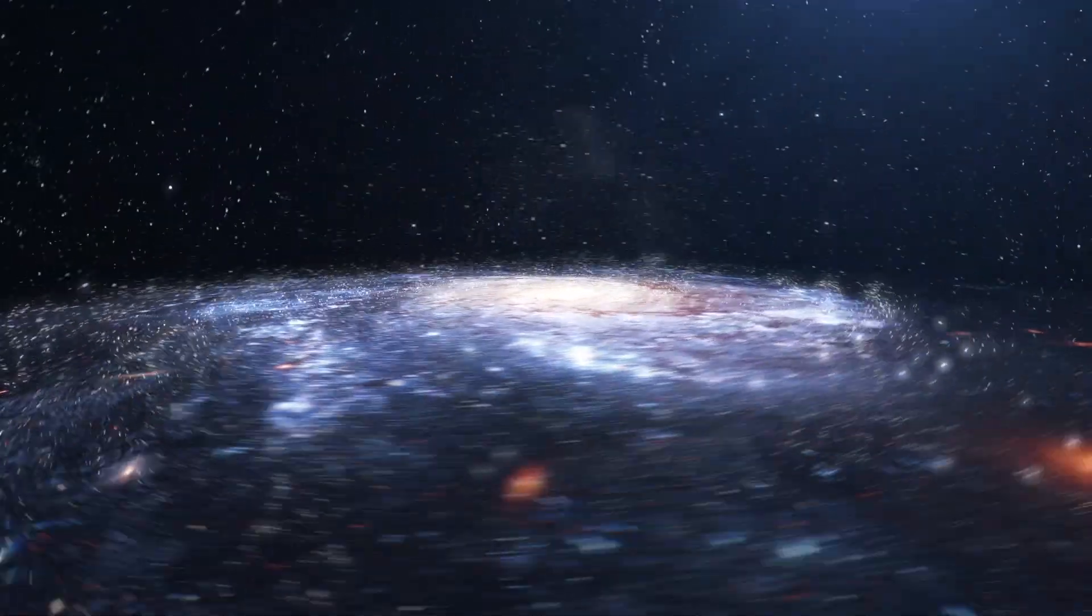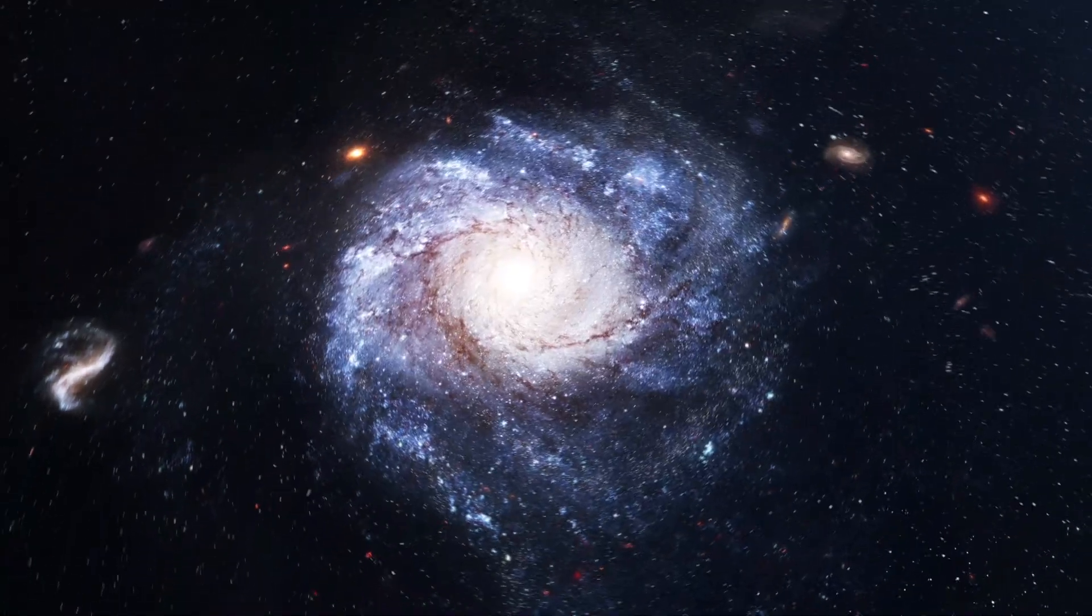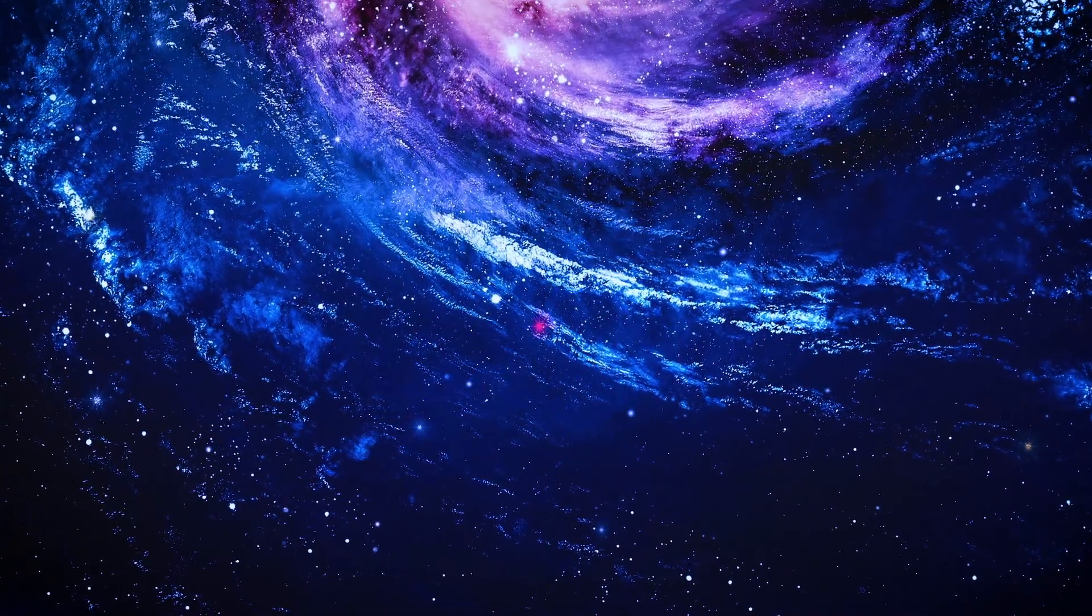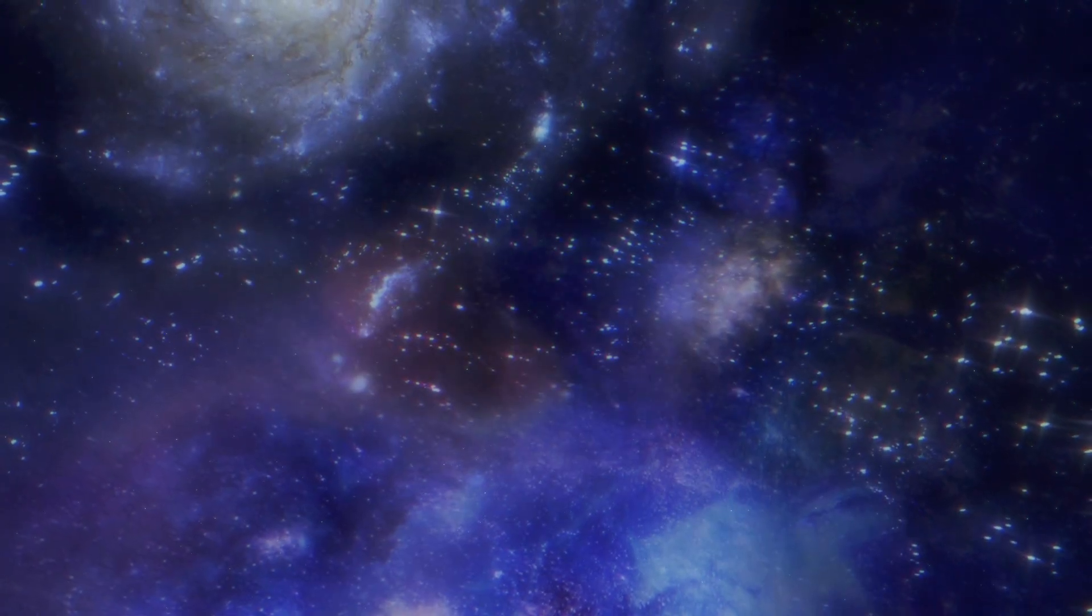Over hundreds of millions of years, the cosmic web gradually formed, starting with small clumps that ignited as the first stars, followed by the emergence of small galaxies that merged to create vast clusters, filaments, and walls. As the rich regions of the universe accumulated more matter, the voids became increasingly devoid of it.